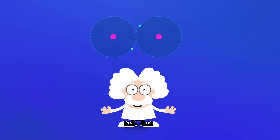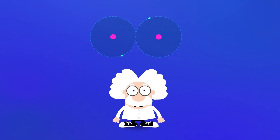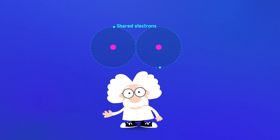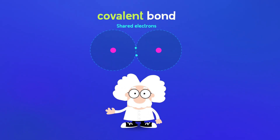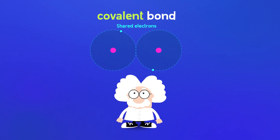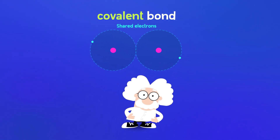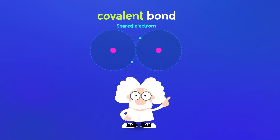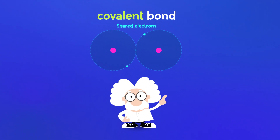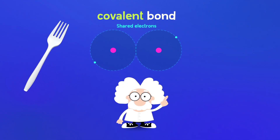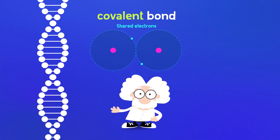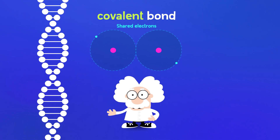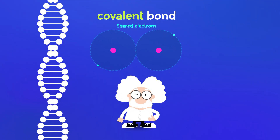Molecules form when atoms share electrons, creating something called covalent bonds. These bonds make up things like water, plastic, and even DNA, the instructions for every living thing.